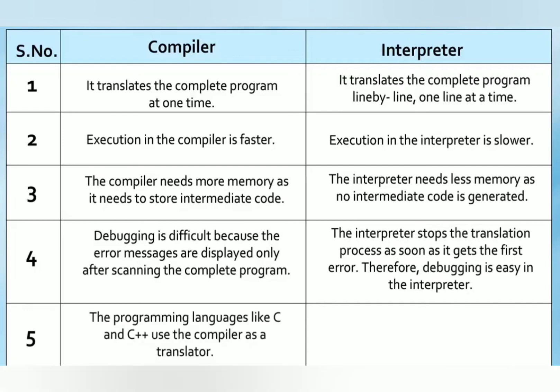The programming languages like C and C++ use compiler as a translator. The programming languages like Python and Basic use the interpreter as a translator.